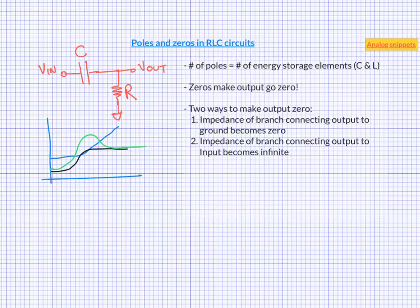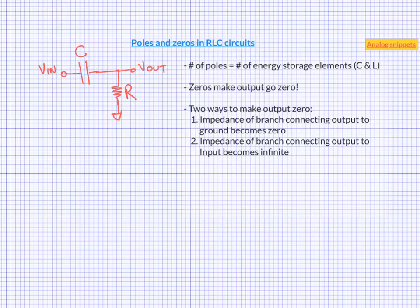So let's first consider the pole in this circuit. The number of poles in a circuit is equal to the number of energy storage elements, and we haven't changed our energy storage element — we still have the same capacitor, just connected differently. So this circuit also has just one pole, and in fact at exactly the same location as the previous circuit. As a general rule, poles of the circuit do not depend on where we are injecting the input or from where we are taking the output. It just depends on the topology or the network of the circuit.